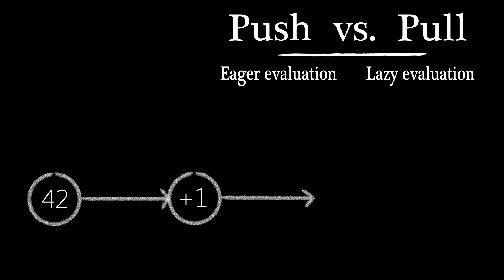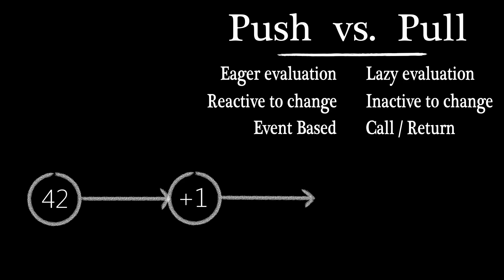The push model can be said to have eager evaluation, while the pull model has lazy evaluation. Push is reactive to changing data, while pull can be said to be inactive to changing data. Push is similar to events, while pull is similar to subroutine call semantics.